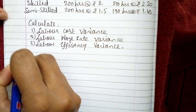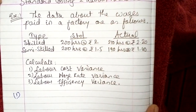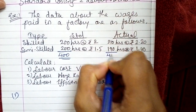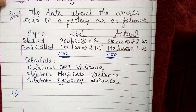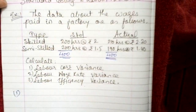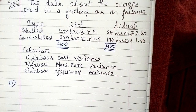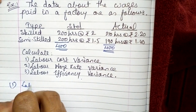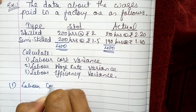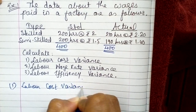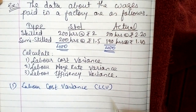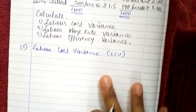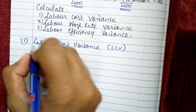Starting with the first. Have a look — the total of both standard hours is 400, and the total of actual hours is 400 as well. So we only need to calculate these 3 variances by placing the values into the formula. The very first one is Labor Cost Variance, LCV.